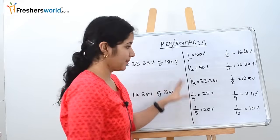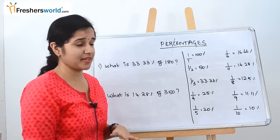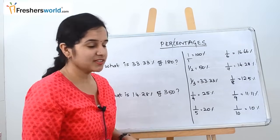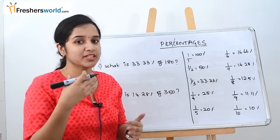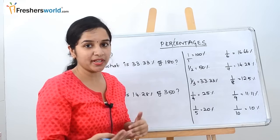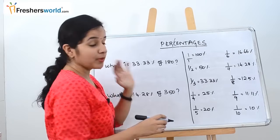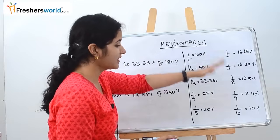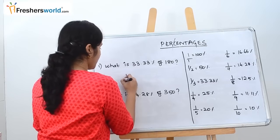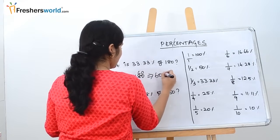Where is this useful? In aptitude examinations they will ask: what is 33.33% of 180? If you don't know these tables, you have to use the elaborate method of 33.33 ÷ 100 × 180, which is very time consuming. But if you know the tables by heart, you know 33.33% = 1/3, so 1/3 × 180 = 60. Directly you get 60.